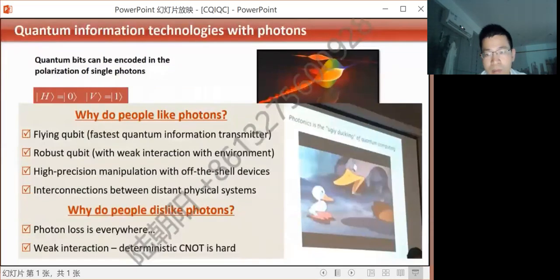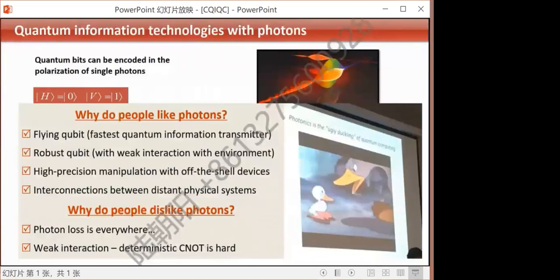Another drawback about photons is that they can get lost easily, as in the source, or in the propagation, or in the detection. This is a learning point that will relate to all three topics I will talk about today: communication, metrology, and computing.